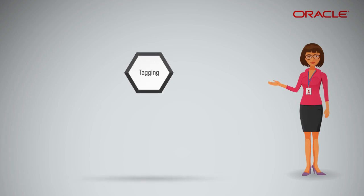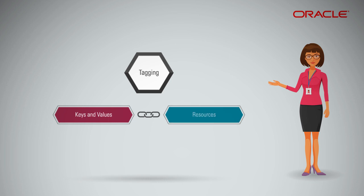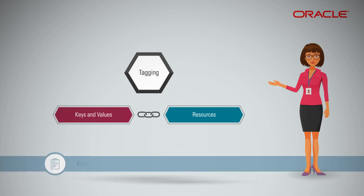Tagging allows you to define keys and values, and then associate them with resources to make it easier to organize these resources based on your business needs. By creating and applying tags, you can filter lists of resources tagged with specific tags from any service that supports tagging.